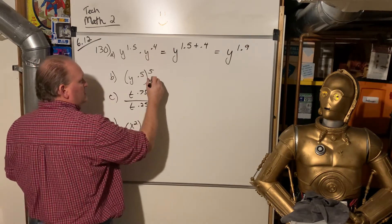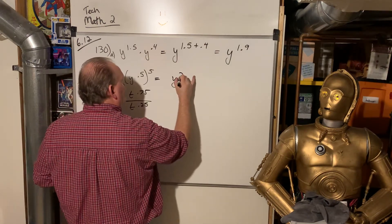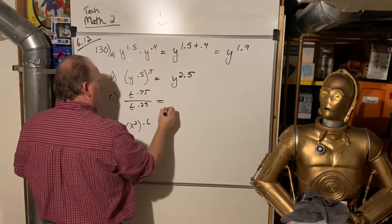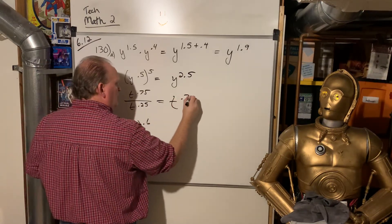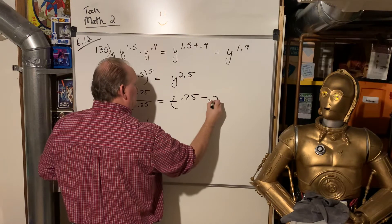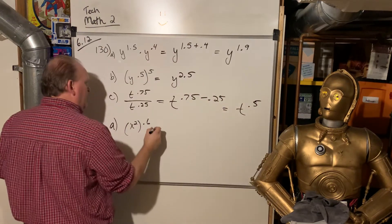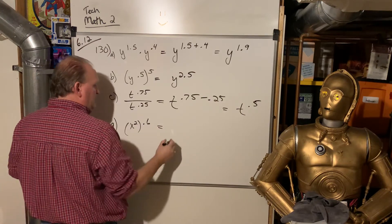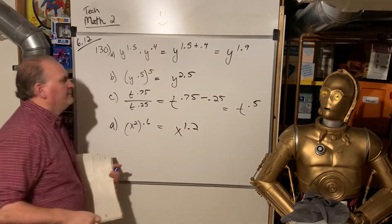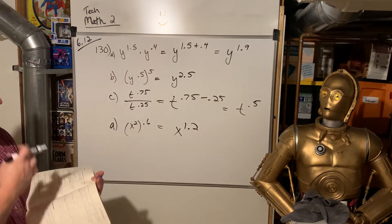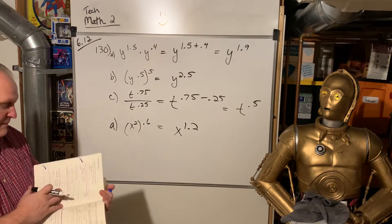So that, when I have a power raised to a power, I multiply. So 5 times 0.5 is 2.5. When I divide things with like bases, I subtract. So that is 0.75 minus 0.25, which is t to the 0.5. And a power to a power. Again, I multiply. So x to the 1.2. All right. Lovely, doubly. Let's look at 613 evaluating powers.